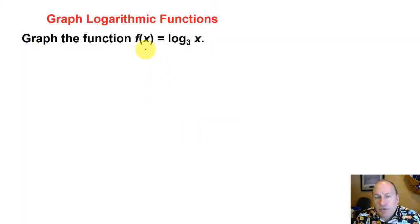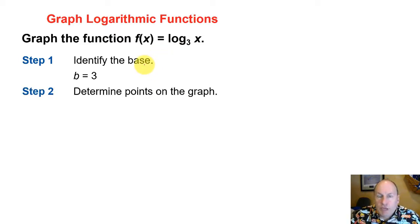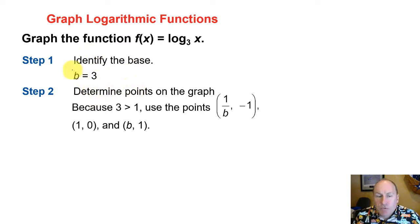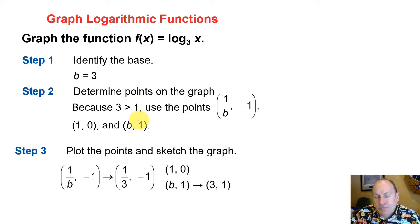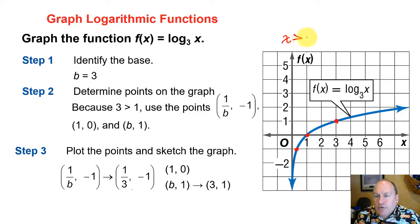Let's take the parent function f of x equals log base 3 of x, where the base is 3. Using the three critical points — 1/b comma negative 1, 1 comma 0, and b comma 1 — we get the points 1/3 comma negative 1, 1 comma 0, and 3 comma 1. Plotting those three points, shown in red, allows us to sketch the curve. The domain is x greater than 0; it can never be negative or zero. The range is all real numbers.